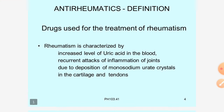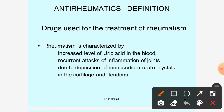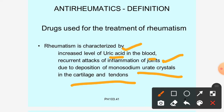So what is rheumatism? Rheumatism is characterized by an increase in the level of uric acid in the blood. There are recurrent attacks of inflammation of the joint — the joint swells and inflammation occurs due to deposition of monosodium uric acid crystals in the cartilage and the tendons.